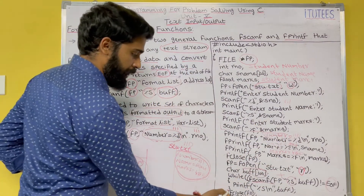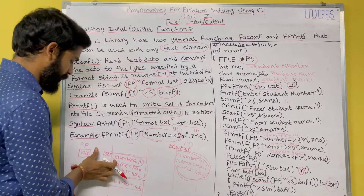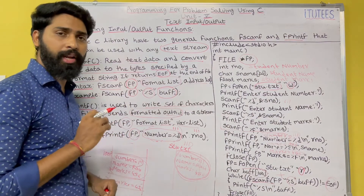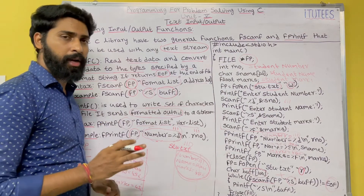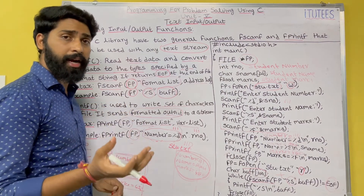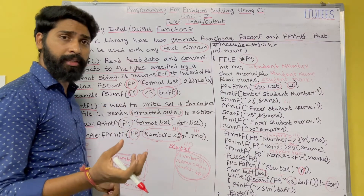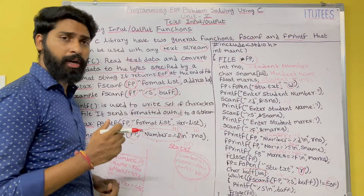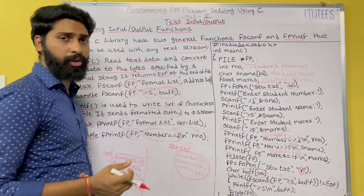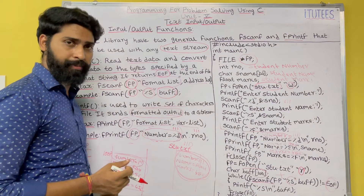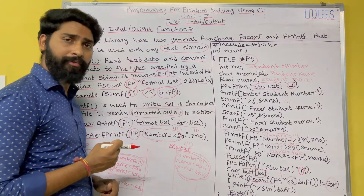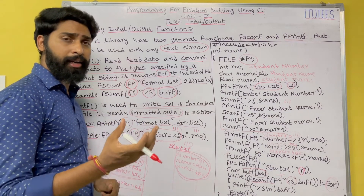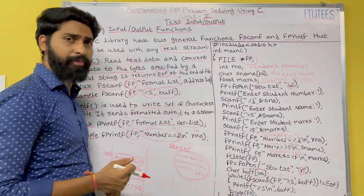That is how the program works. We have seen how to read data from the keyboard and store it in a file, and how to read data from a file and print it to the monitor. fscanf is used to read data from a file, and fprintf is used to write data onto a file.